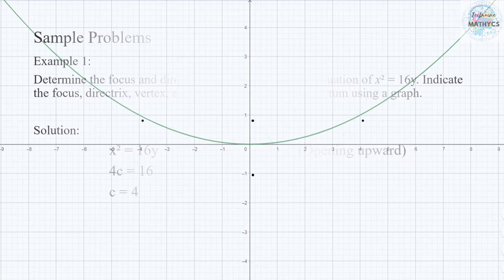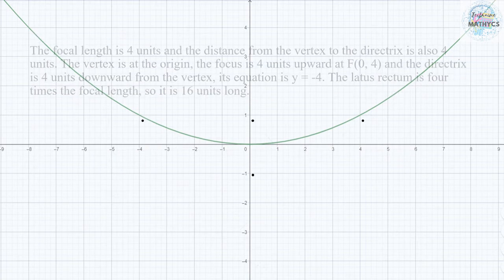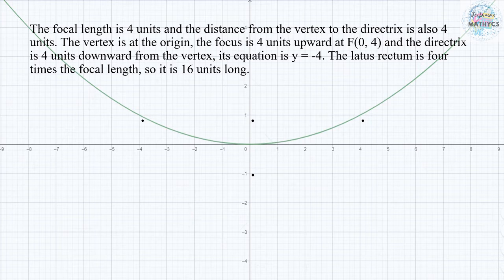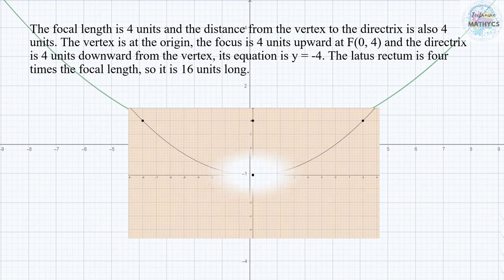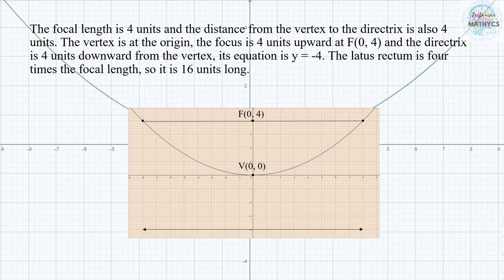The focal length is 4 units and the distance from the vertex to the directrix is also 4 units. The vertex is at the origin, the focus is 4 units upward at F(0, 4), and the directrix is 4 units downward from the vertex, so its equation is y equals negative 4. The latus rectum is 4 times the focal length, so it is 16 units long.